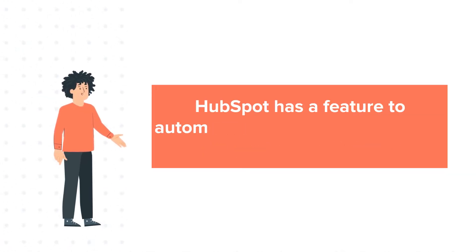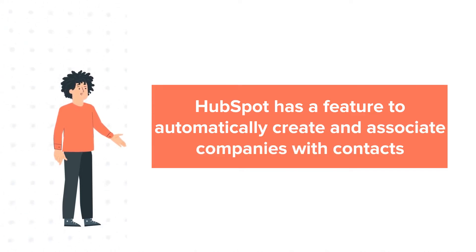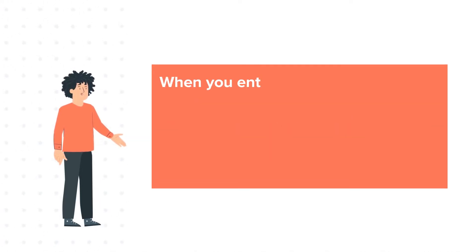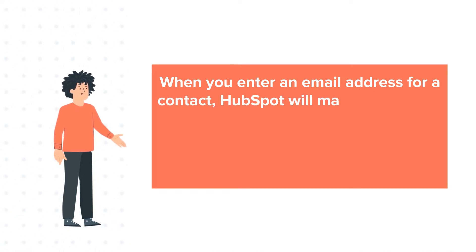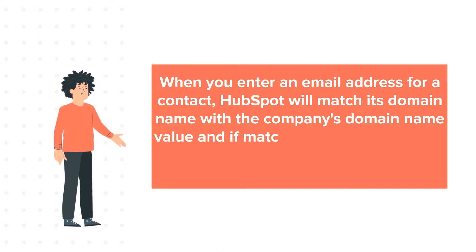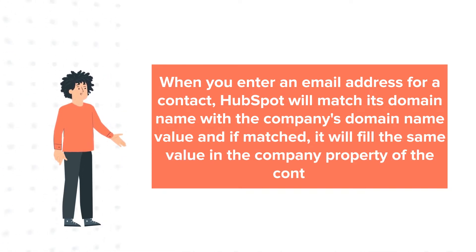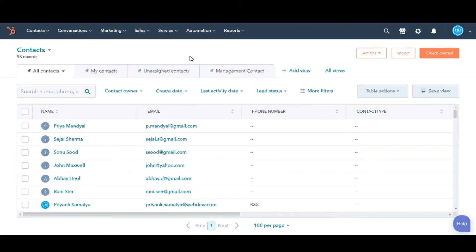HubSpot has a feature to automatically create and associate companies with contacts. When you enter an email address for a contact, HubSpot will match its domain name with the company's domain name value, and if matched, it will fill the same value in the company property of the contact. Let's see how you can do this.